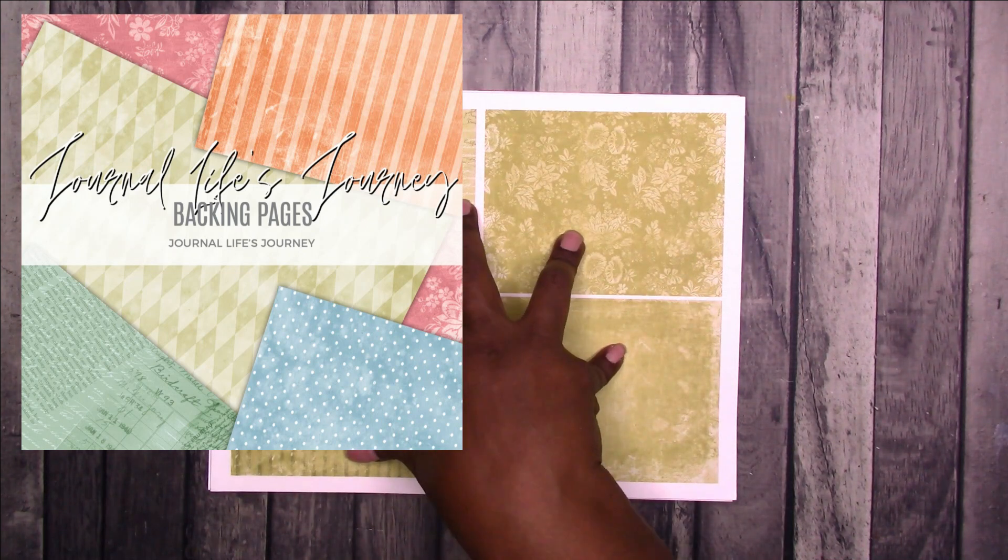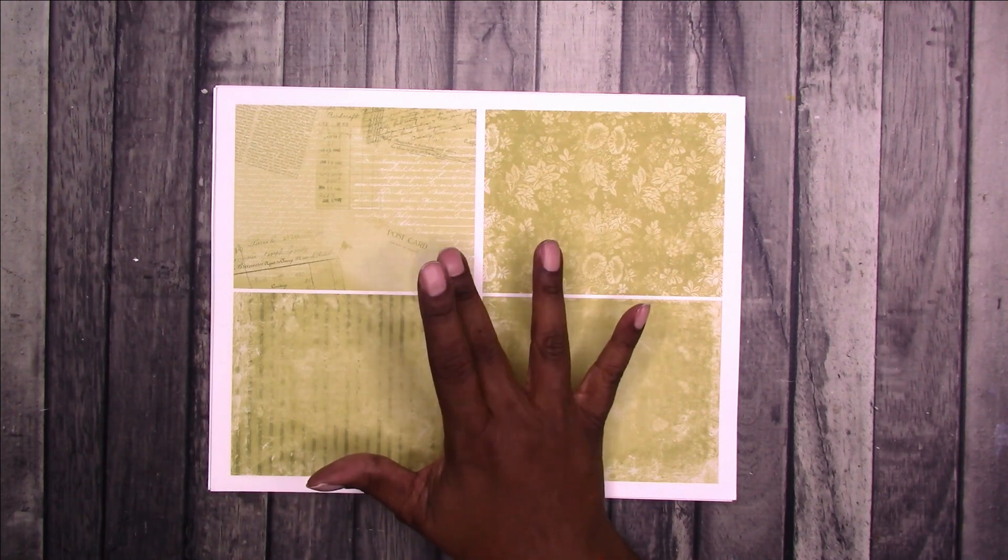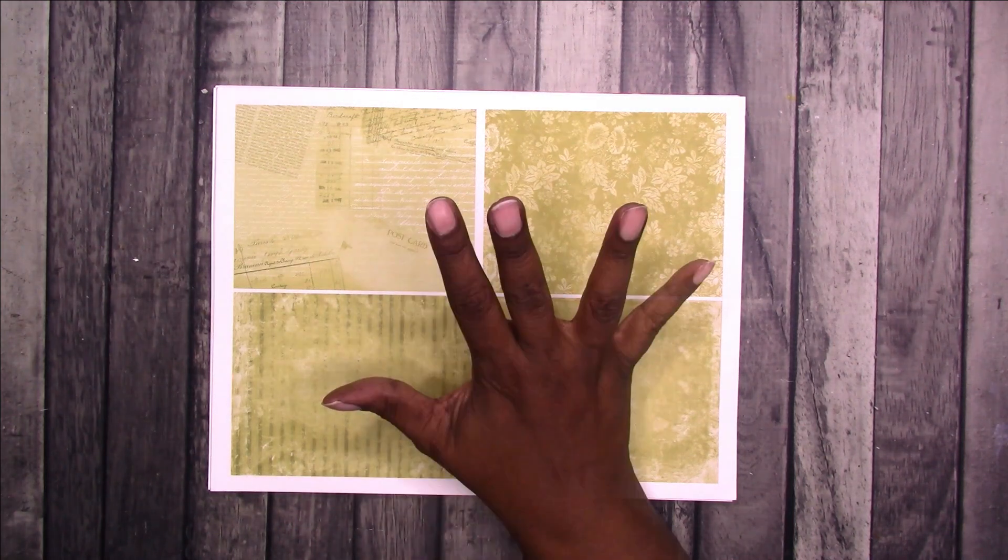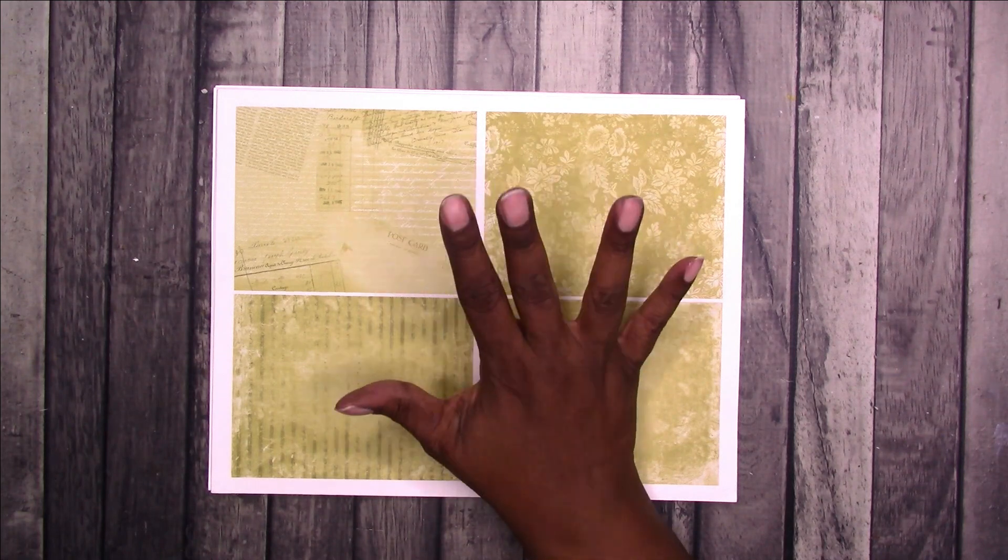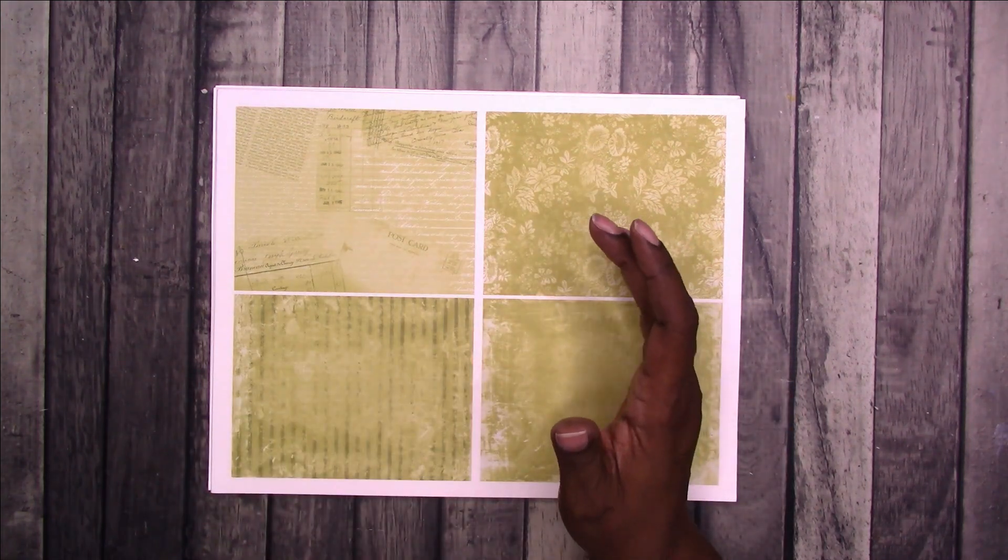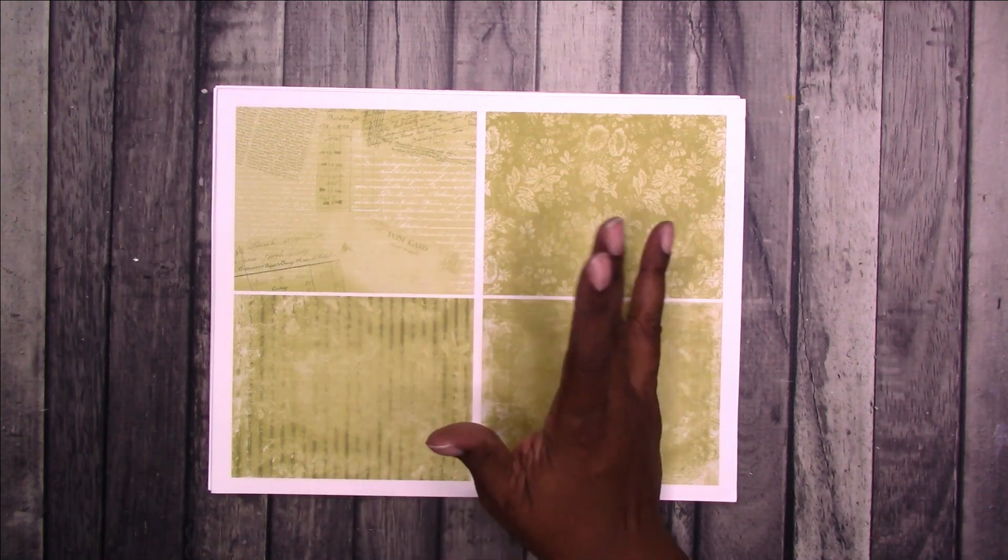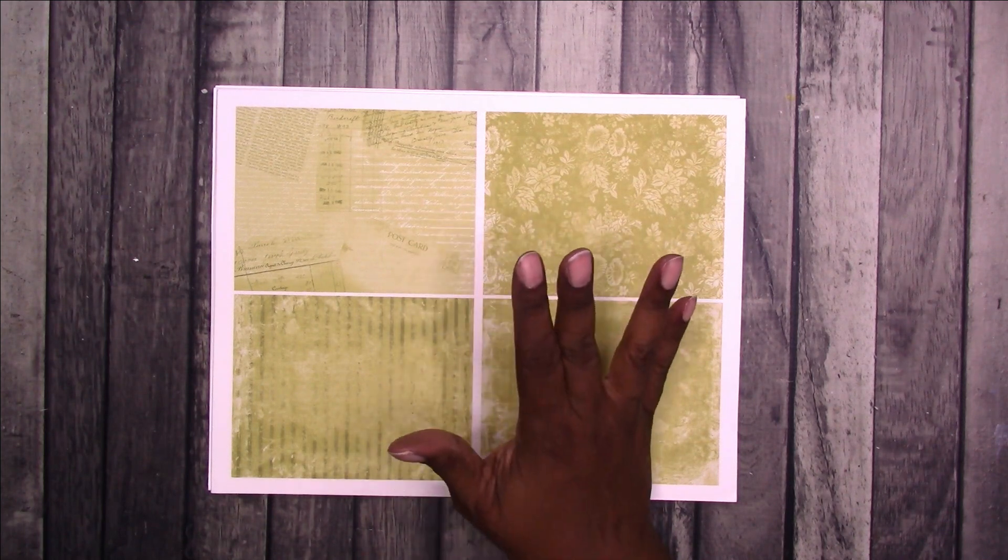I've printed those backing pages four to a page just to give you a look at the different colors and designs that are available. This set includes 10 patterns, 10 colors, it's in horizontal orientation. There will be a vertical version coming and a lot of these you can use in either orientation as well.